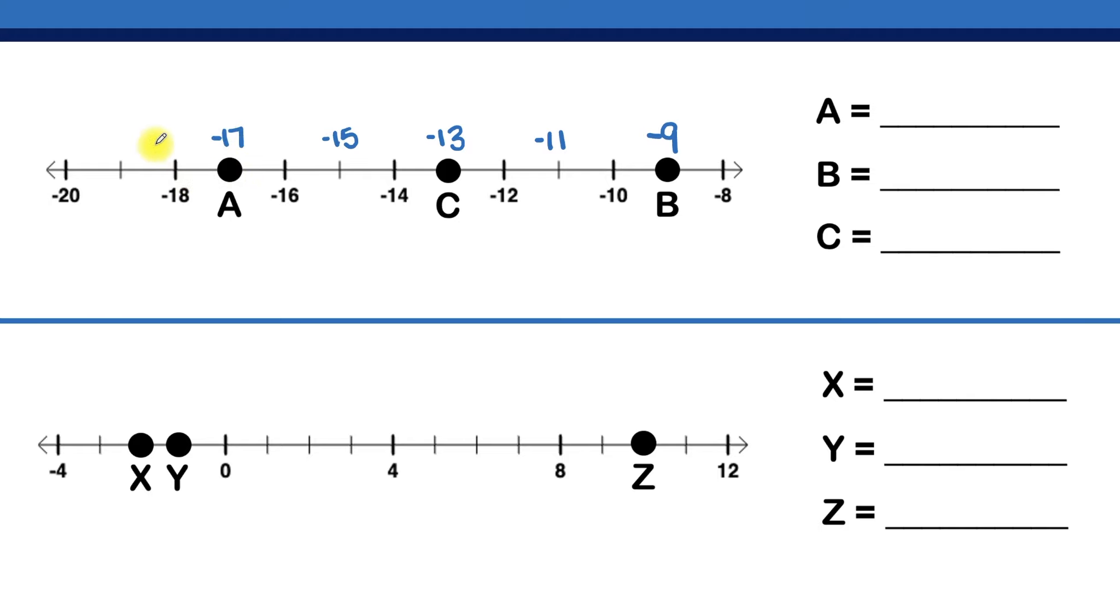Then negative 18, then negative 19, followed by negative 20. And the negative numbers will go on forever and ever in that direction. That's what this arrow means.